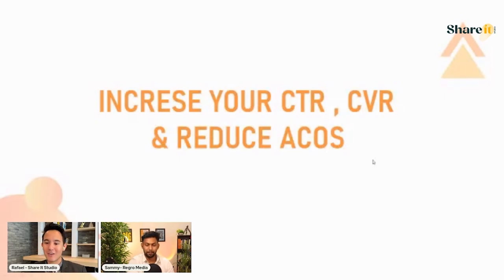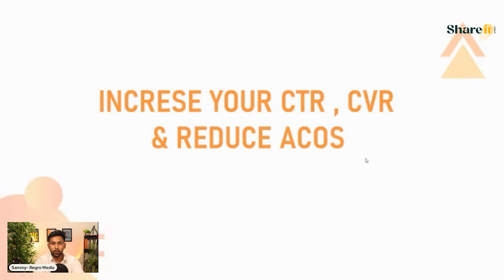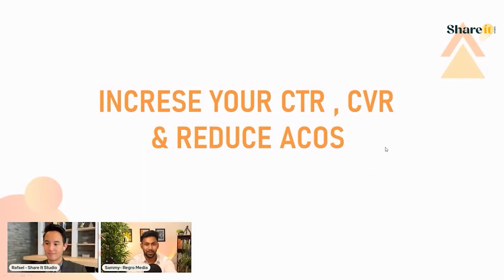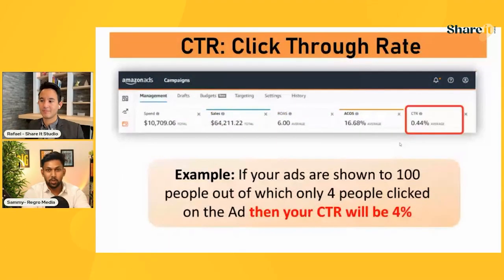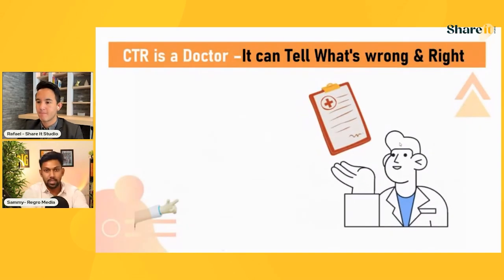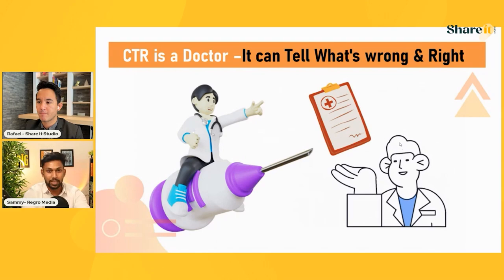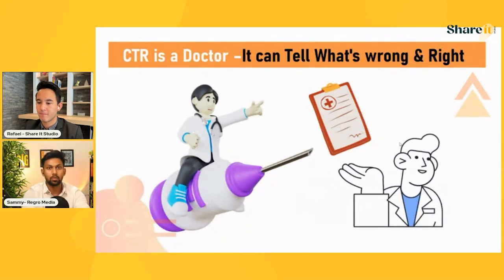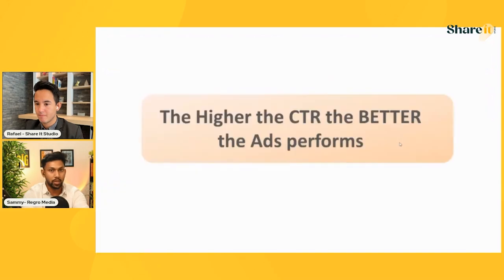Let's quickly go over how to increase your CTR, CVR, and reduce your ACoS — probably the two most important metrics when you're selling on Amazon. CTR is click-through rate. You can see it in your advertising dashboard. If 100 people are seeing your ad and only four people are clicking, that gives you a CTR of 4%. I often call CTR the doctor of advertising — it can tell you what is wrong, what is right, and you can tweak things to make sure it's right.